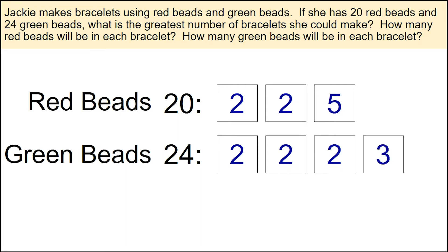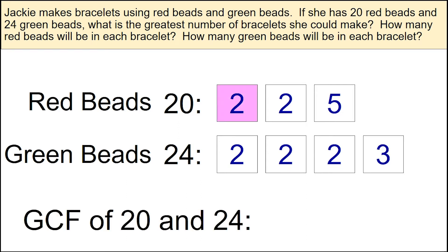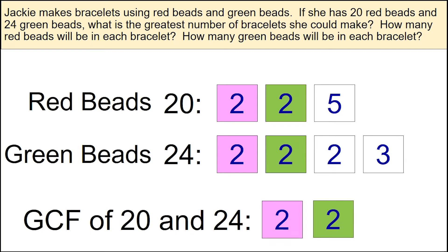Moving forward with finding the greatest common factor, we can see that the number 2 shaded in pink is common for both 20 and 24. The 2 shaded in green is also common for the numbers 20 and 24. There are no other numbers that are common for both. Hence, the greatest common factor of 20 and 24 is 2 times 2, which is 4.